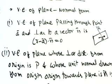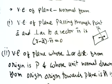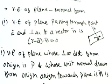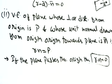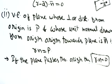Vector equation of a plane in normal form: equation of plane passing through point a and perpendicular to vector n is (r − a)·n = 0. Vector equation of plane whose perpendicular distance from origin is p and unit normal from origin is n̂ is r·n̂ = p. If the plane passes through the origin, p = 0, so r·n̂ = 0.